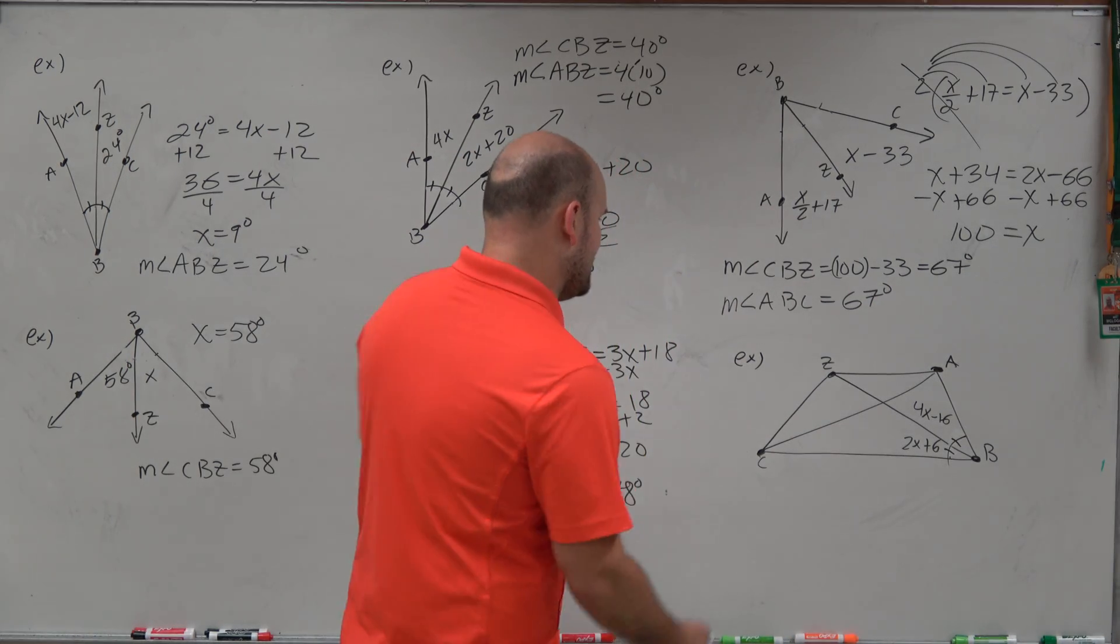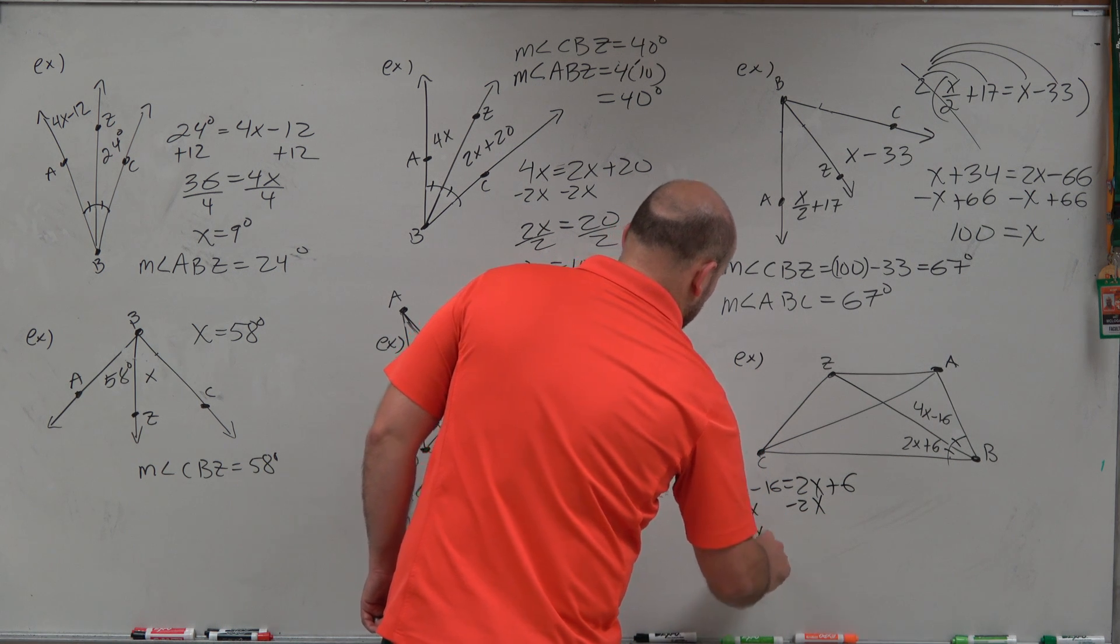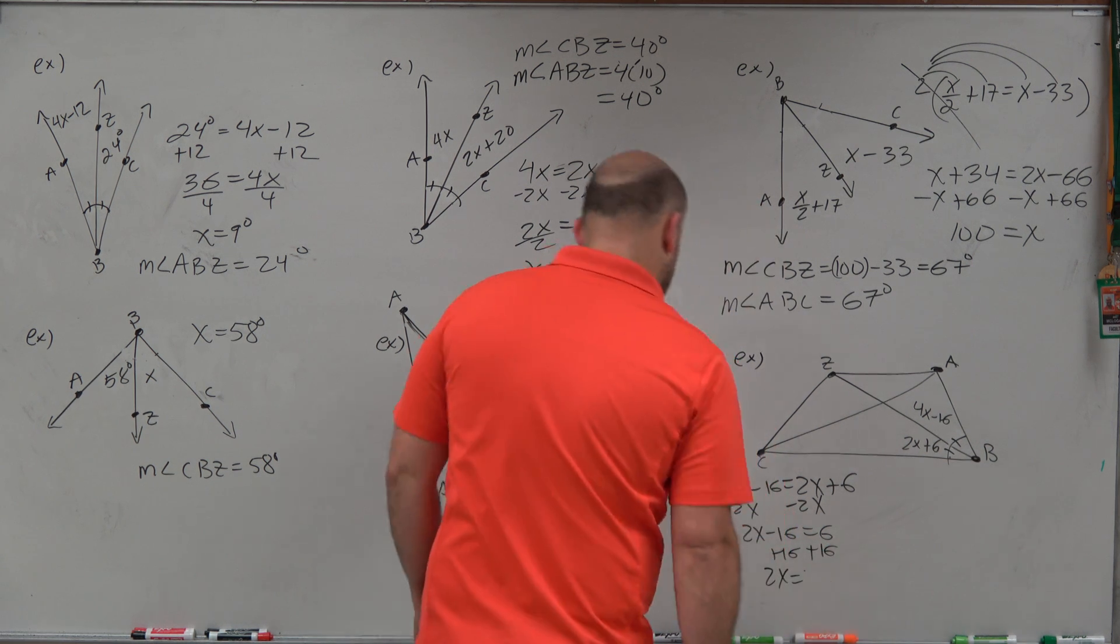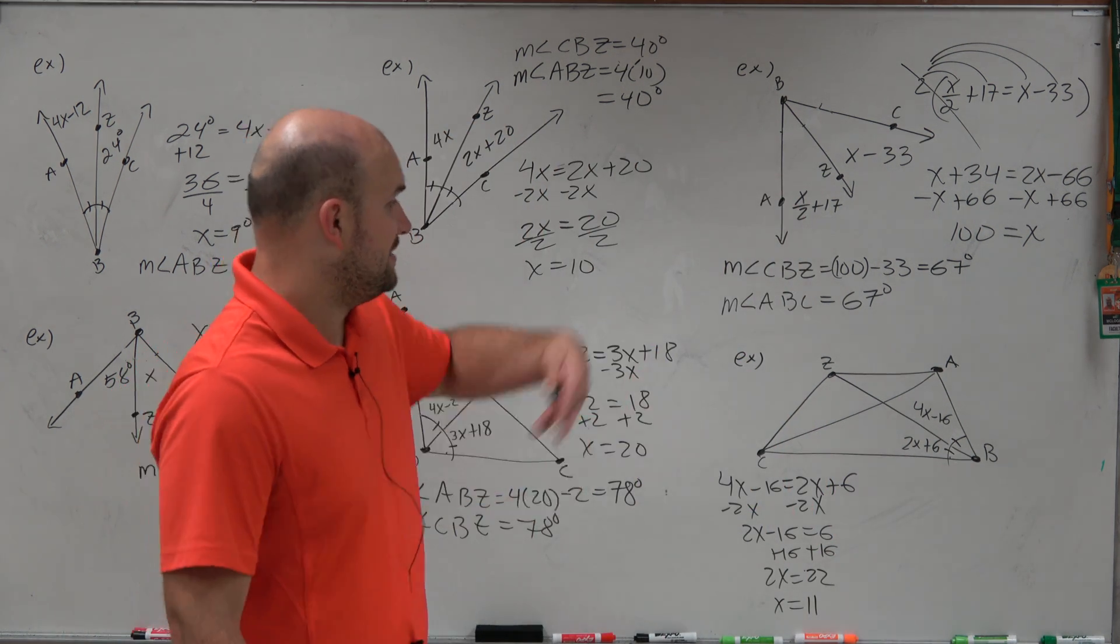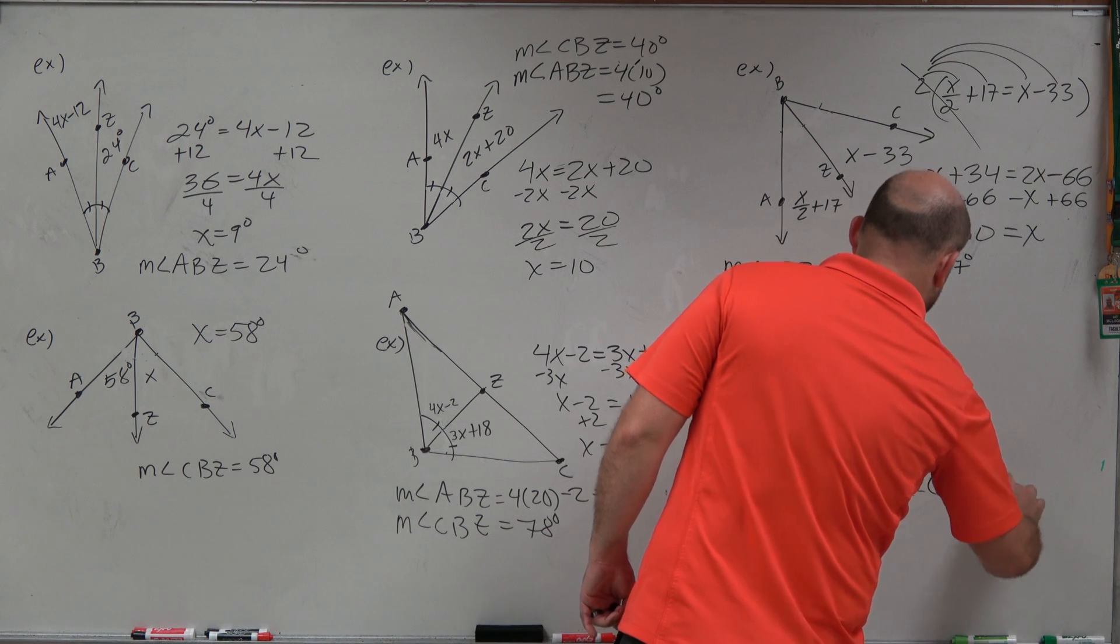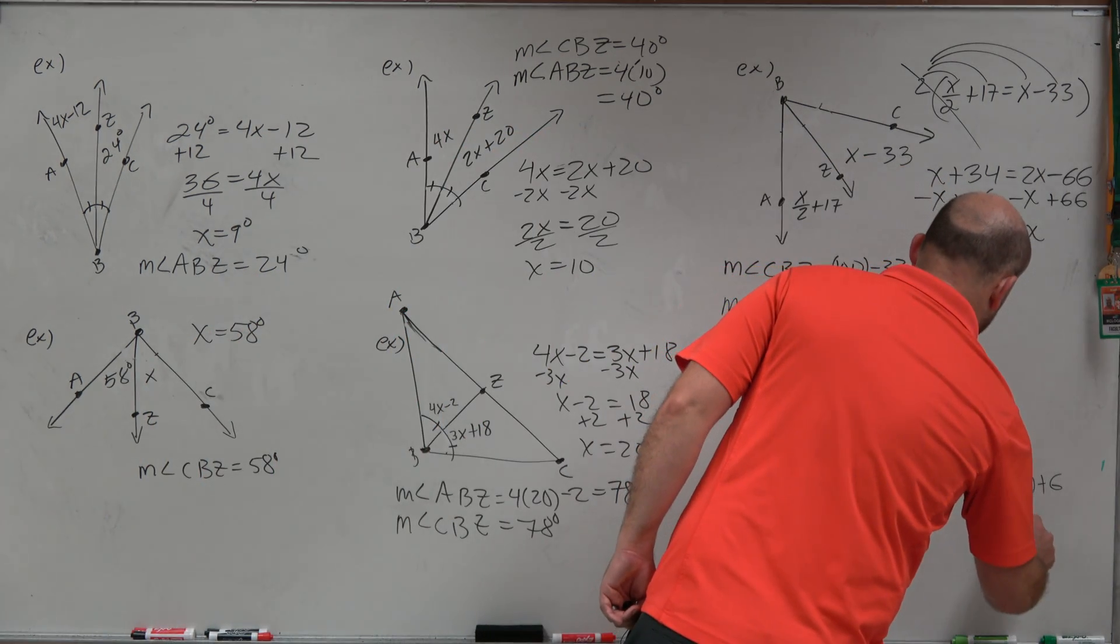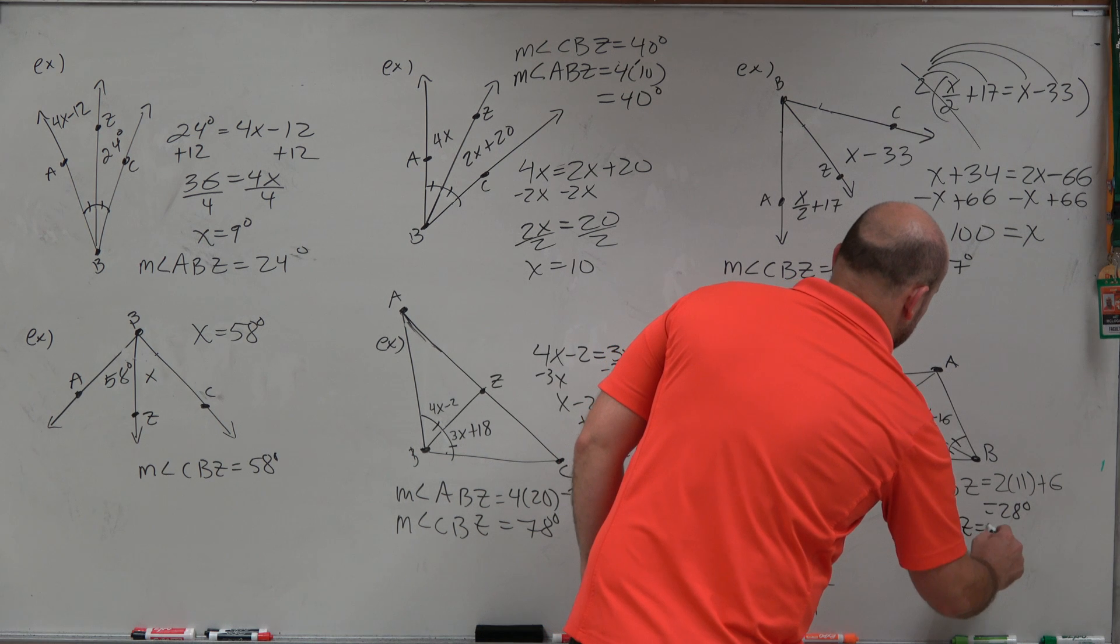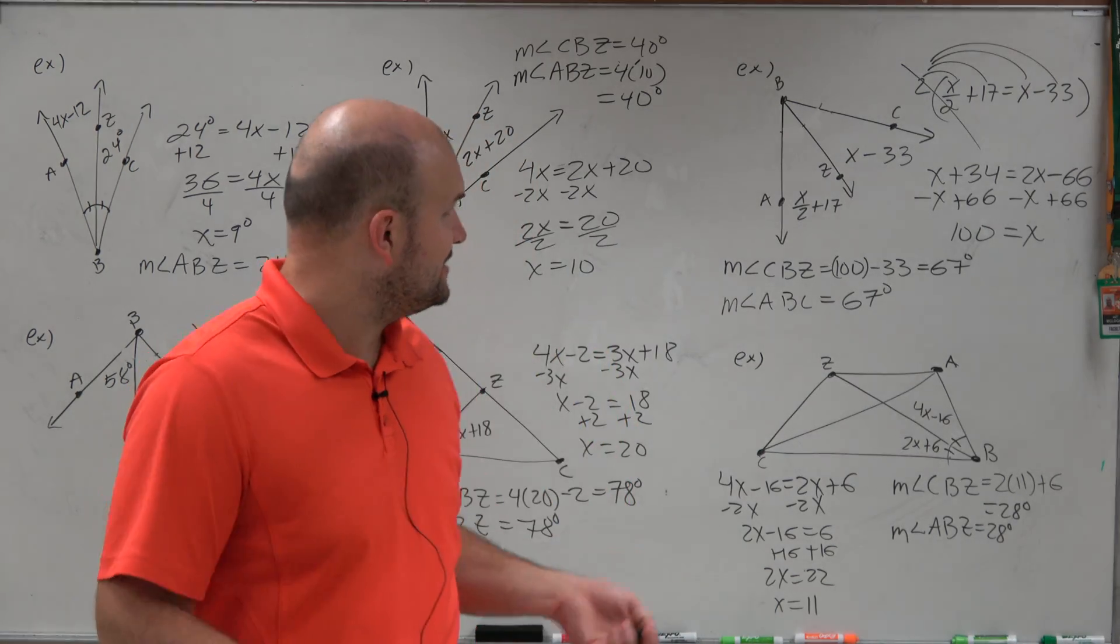Last but not least, we have this one. So again, I'll just set up another equation. 4x minus 16 is equal to 2x plus 6. Subtract the 2x on both sides. 2x minus 16 is equal to 6. Add 16, add 16. 2x is equal to 22. Therefore, x is equal to 11 as you divide by 2 on both sides. Now we can just plug that into any angle. And I'll do the measure of angle CBZ is 2 times 11 plus 6. 2 times 11 is 22 plus 6 is 28 degrees. And therefore, if that's 28 degrees, that means measure of angle ABZ is also 28 degrees. And let's just double check that. 4 times 11 is 44. Minus 16 would be 28 degrees.